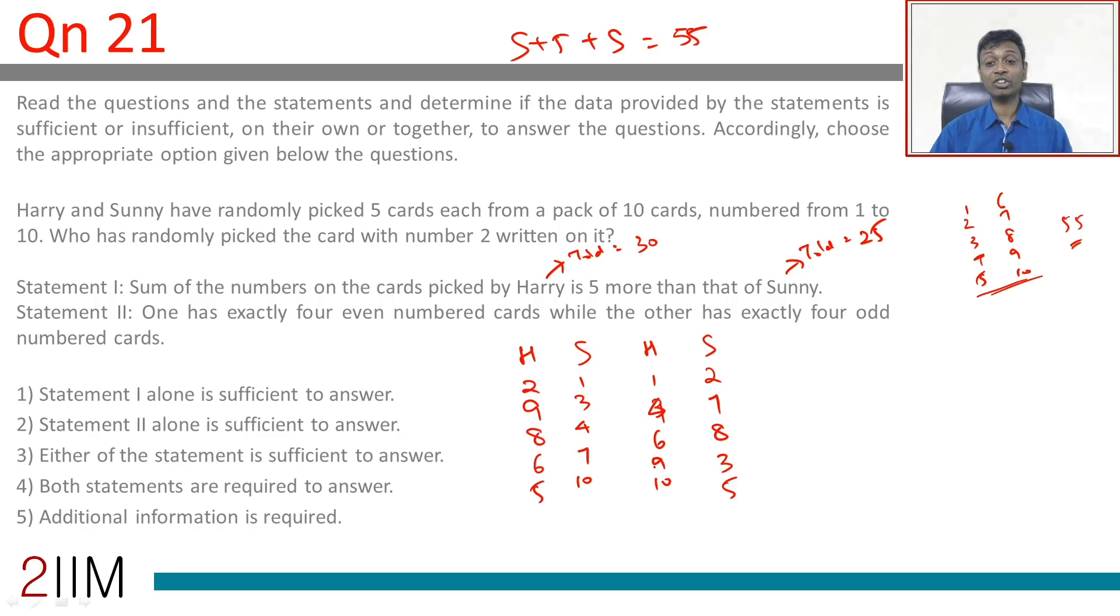Harry's total is 30, Sonny's total is 25. Harry could have the 2 or Sonny could have the 2. Statement 1 is not sufficient. Statement 2: one has exactly 4 even numbered cards while the other has exactly 4 odd numbered cards.